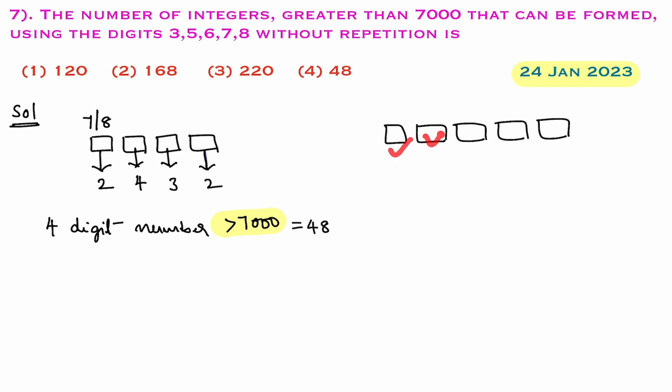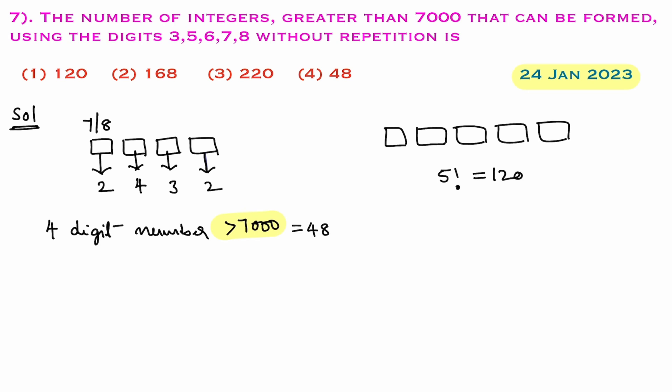So here five boxes are there and five numbers are there. These five numbers in five boxes can be filled in 5P5 ways. 5P5 is nothing but 5 factorial. 5 factorial is 120. Therefore, total number of five-digit numbers which are greater than 7000 is 120.